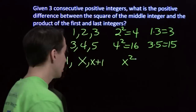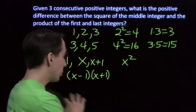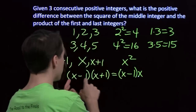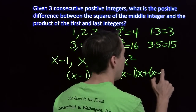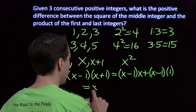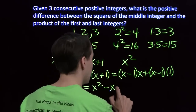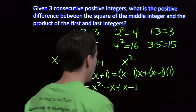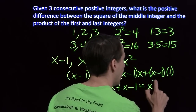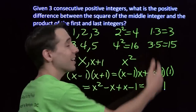Now I have to multiply the first and the last: (x minus 1) times (x plus 1). I'm going to use the distributive property to multiply this out. We get (x minus 1) times x, plus (x minus 1) times 1. Using the distributive property again: x times x is x squared, minus 1 times x is minus x, x times 1 is x, and minus 1 times 1 is minus 1. These two middle terms cancel — minus x plus x — and we're left with x squared minus 1. So the square of the middle integer is always one more than the product of the first and the last.